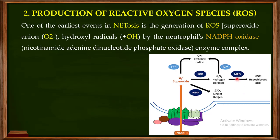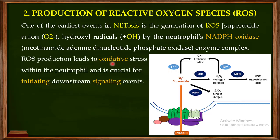Another enzyme involved is myeloperoxidase, present in the granules of neutrophils. Myeloperoxidase is responsible for forming reactive oxygen species like hypochlorous acid, which in turn gives hydroxyl radicals. So both NADPH oxidase and myeloperoxidase contribute to ROS production through a variety of mechanisms. This production of reactive oxygen species leads to oxidative stress within the neutrophils, which is crucial for initiating downstream signaling events.